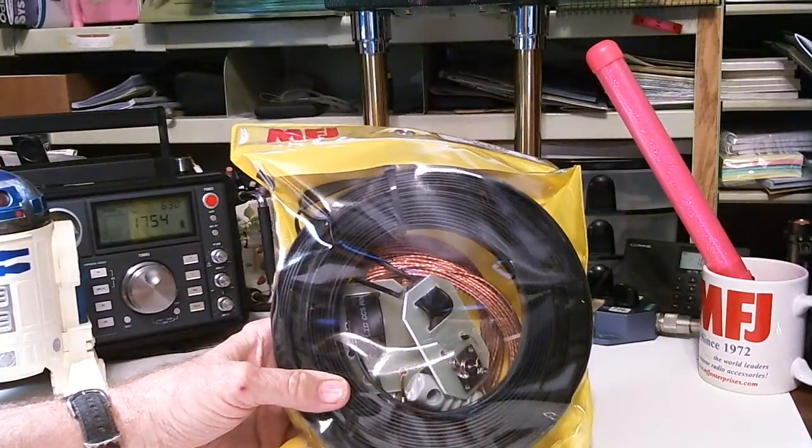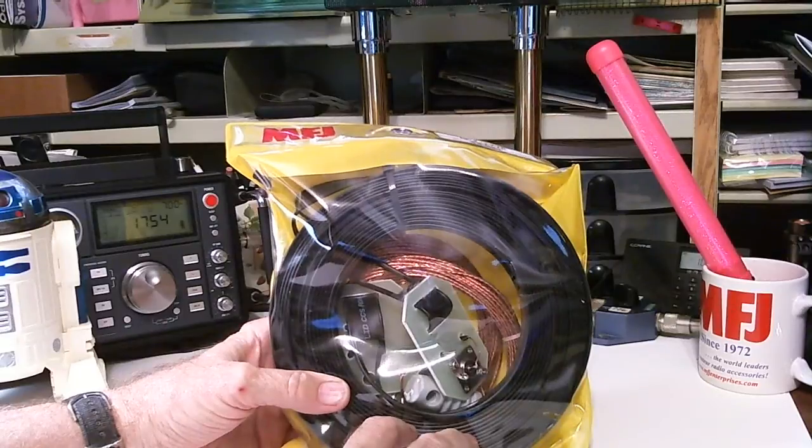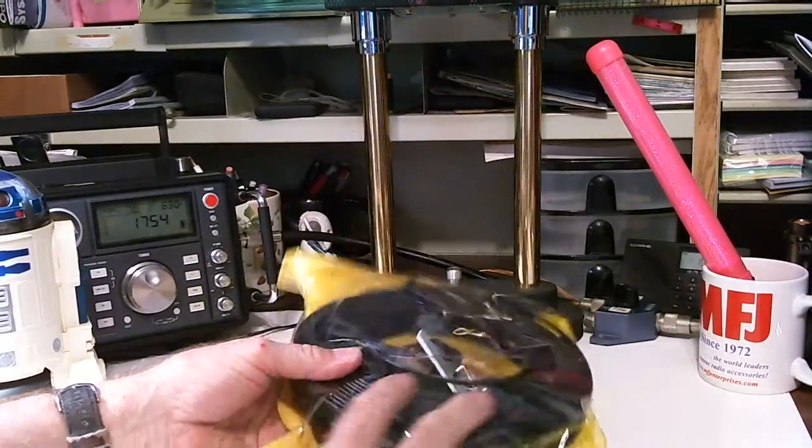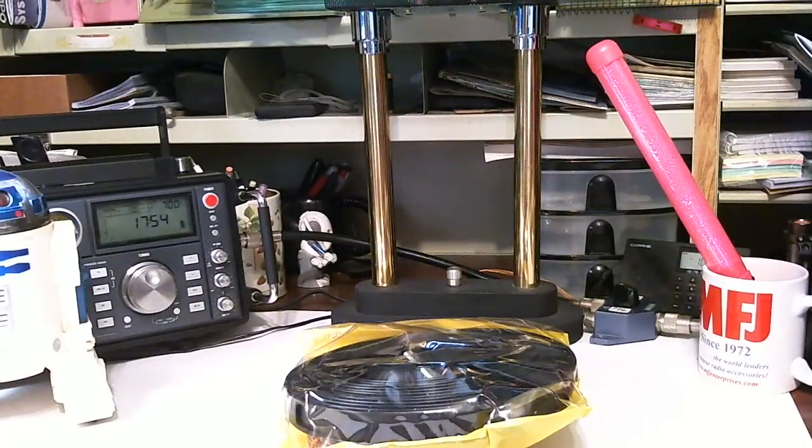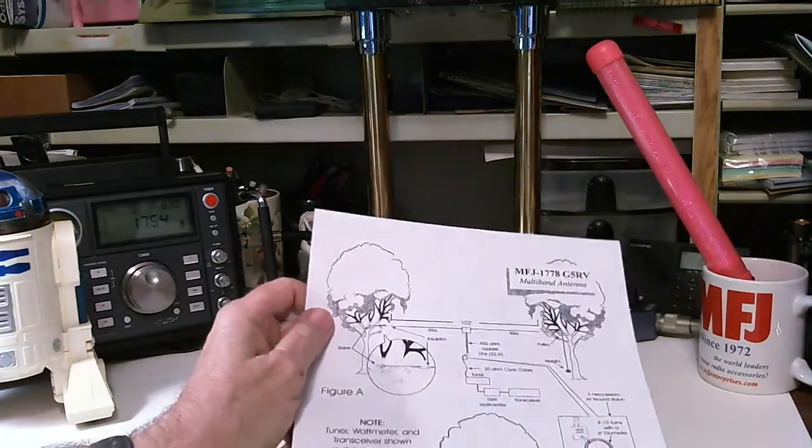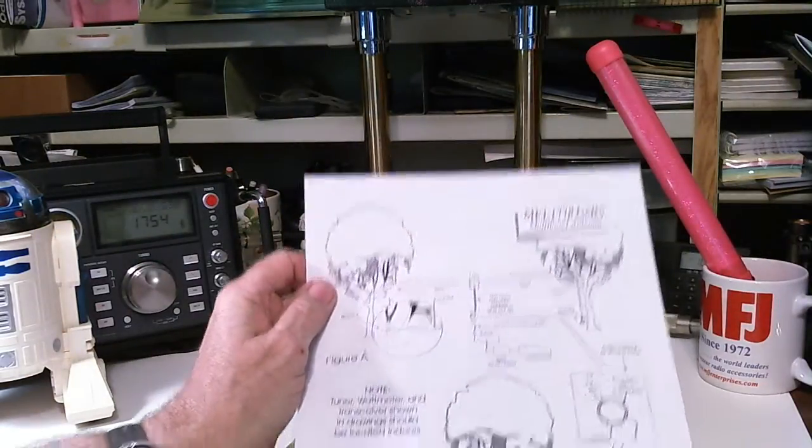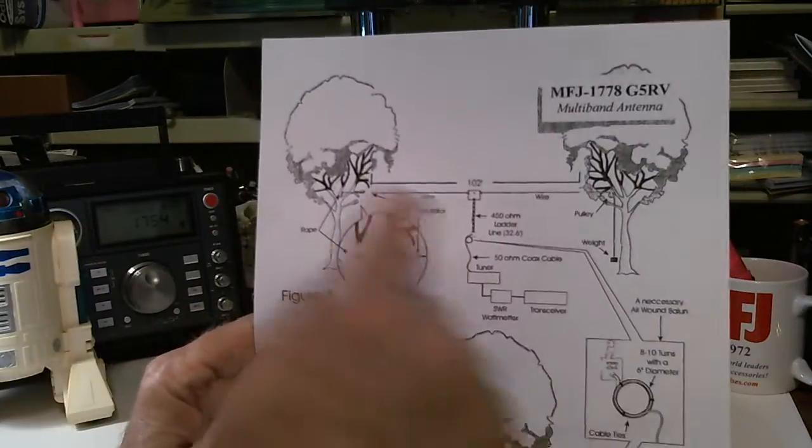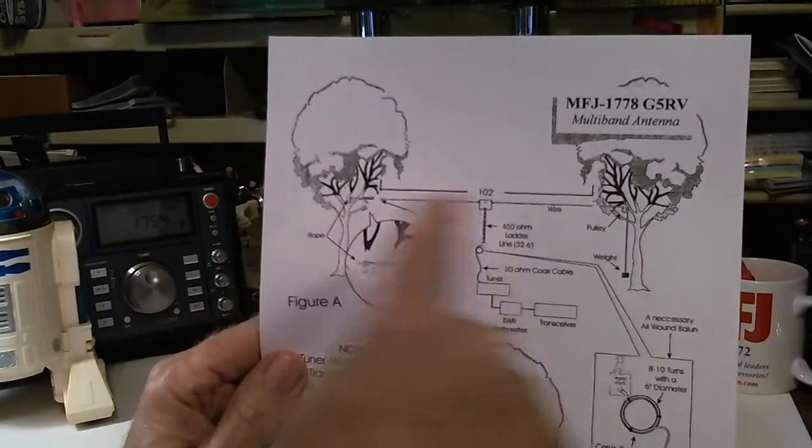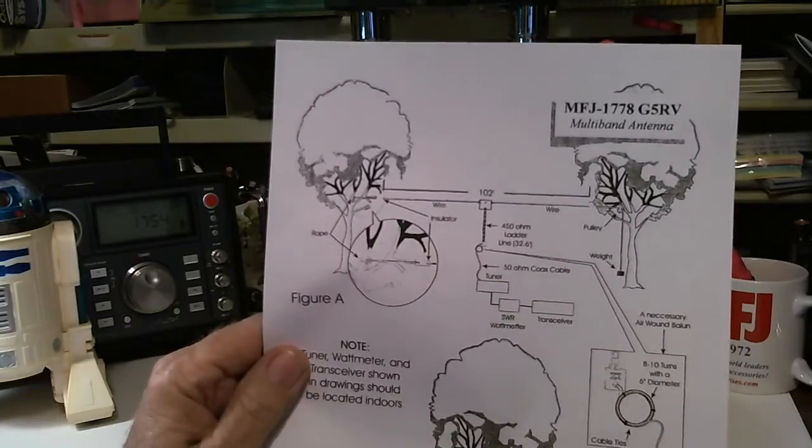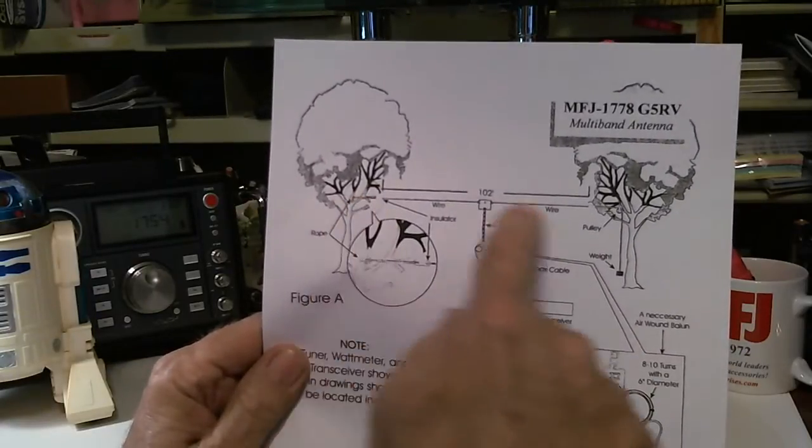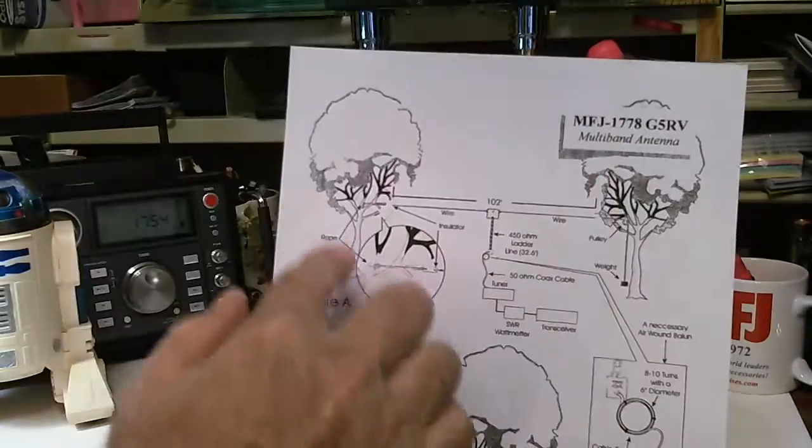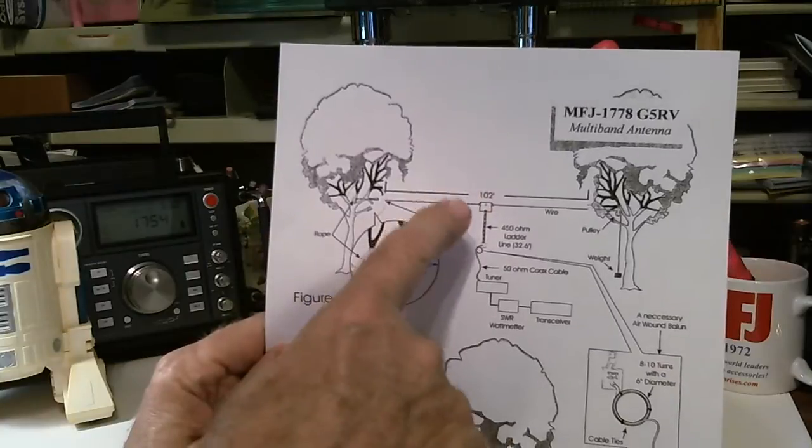I'll show you a picture of what it consists of. This represents two trees that you can string it between. The overall length of the top horizontal piece for this version is 102 feet.